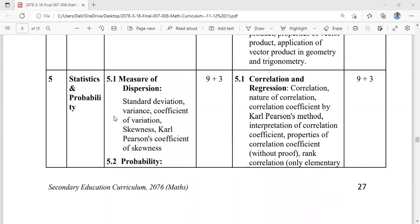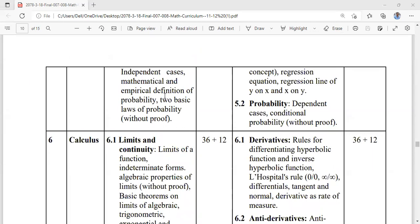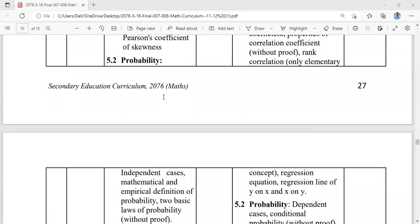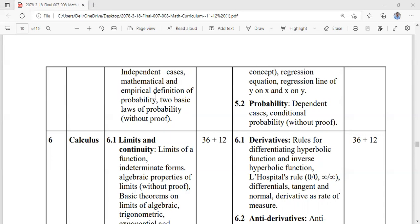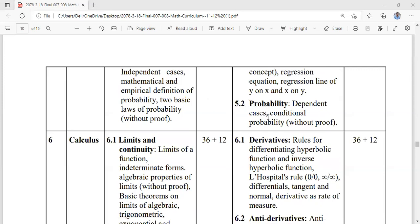In statistics and probability, standard deviation and skewness are in class 11, while regression and correlation are in class 12. The basic concepts of probability that students learned in grade 10 are in class 11 with related problems. Dependent cases and conditional probability are covered without proof, focusing on problem-solving. The load has been reduced as students no longer need to study binomial distribution.